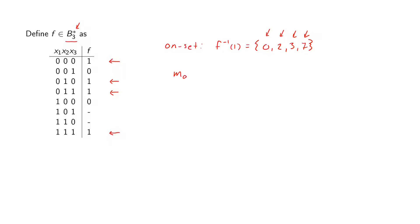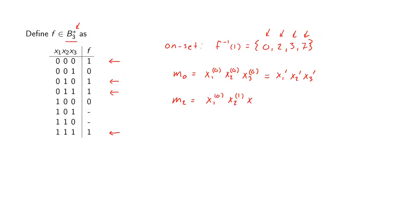Let us start looking at the first min term, which we're going to denote m0. This will equal x1 to the 0, x2 to the 0, and x3 to the 0, which we can also write as x1 prime, x2 prime, x3 prime. Our next min term m2 is x1 prime, x2 to the 0, and x3 to the 0, which we can also write as x1 prime, x2, x3 prime.